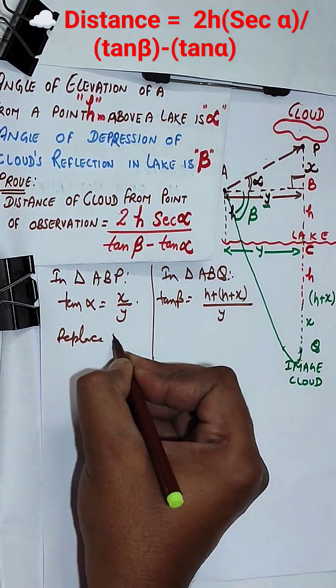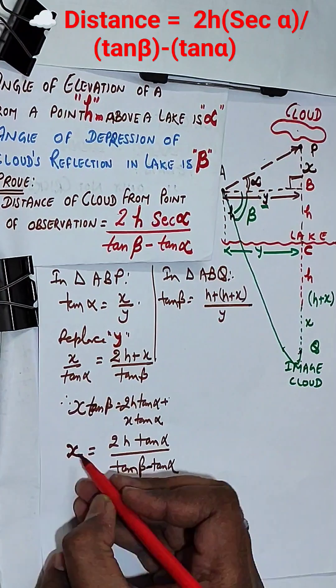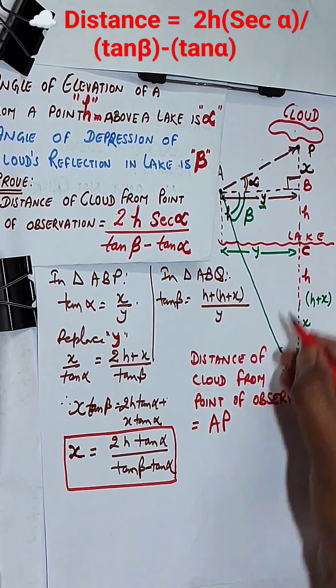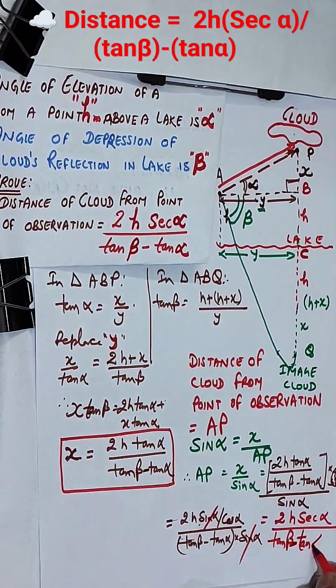We eliminate y to get x. AP is the distance of cloud from point of observation to the cloud, that we get by sine alpha. Put the value of x.